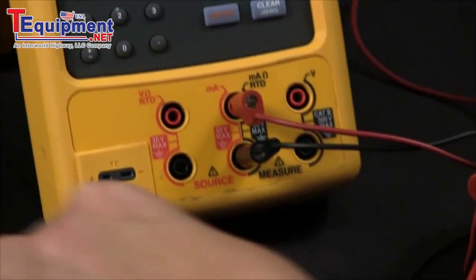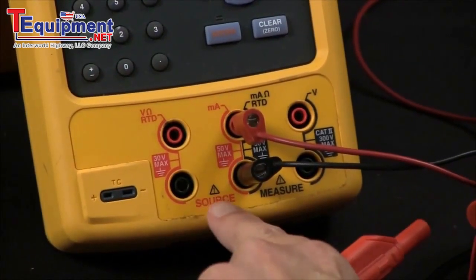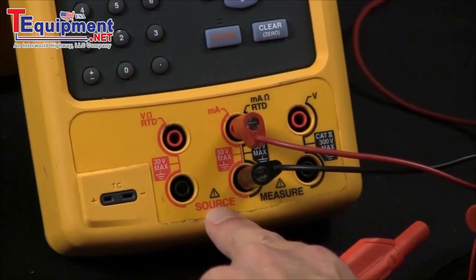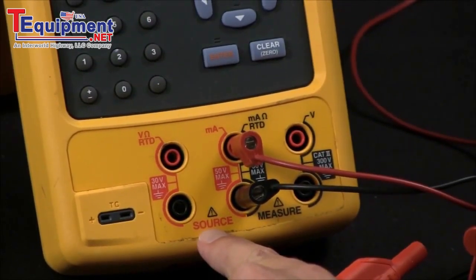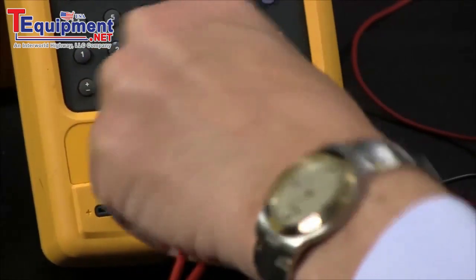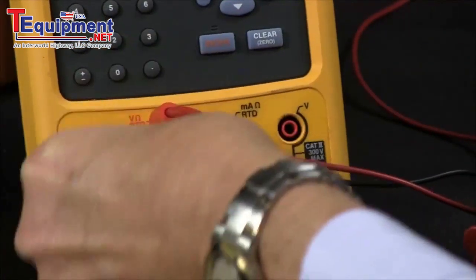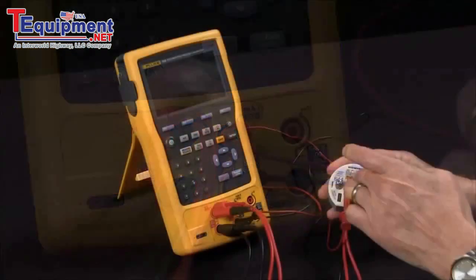We look at the 754 - everything in red is source, so we want to source RTD, so we look for source RTD. We plug our two leads in here and our loop power connects here, and that's also where we measure our milliamps.